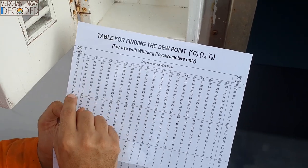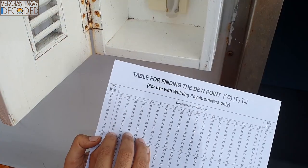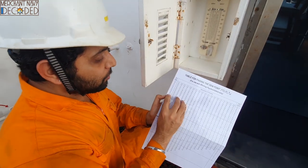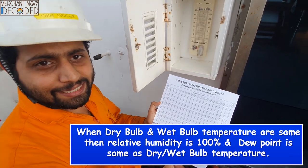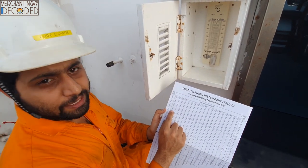Now suppose dry bulb temperature was 31 and wet bulb temperature would also have been 31. That means the depression would have been 0 — no difference. Then in that case, dew point would also have been 31 degrees centigrade. When both the dry bulb and wet bulb temperatures are the same, that is the dew point, and relative humidity is at 100%. Relative humidity 100%, dew point is at 31 degrees centigrade.